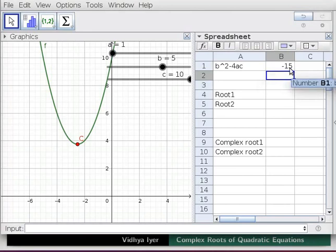Note discriminant is always negative for quadratic functions without real roots. In cell B3 type within quotes -b/2a and press enter.